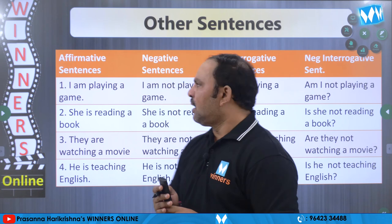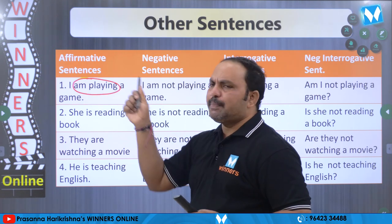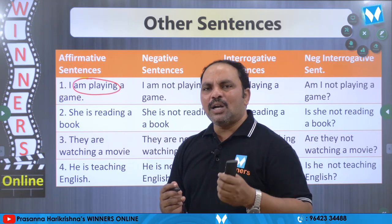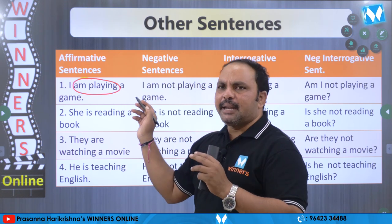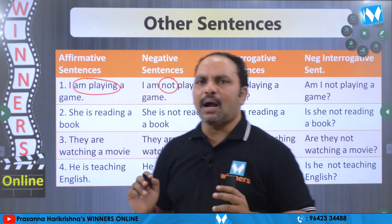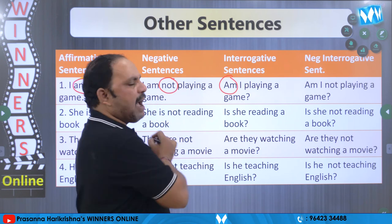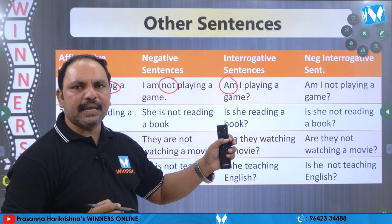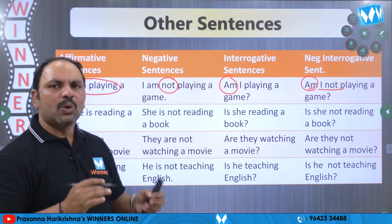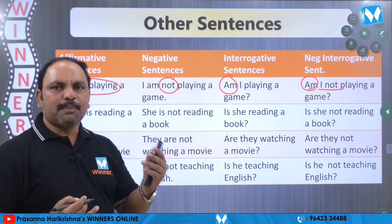I am playing a game — idhi affirmative sentence. Negative raayali ante am tharavata 'not' ane padani upayoginchandi: I am not playing a game. Nenu ippudu game raadamlhedhu. Marii question enti: Am I playing a game? Helping verb enti kada — am kabatti am to start chesyamu. Am I playing a game? Negative interrogative: Am I not playing a game?